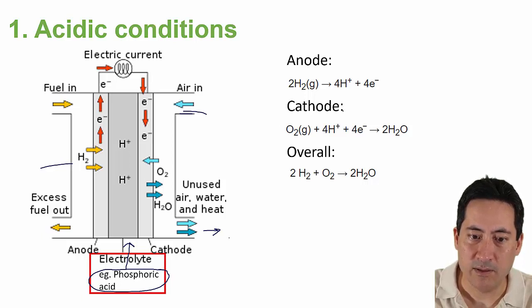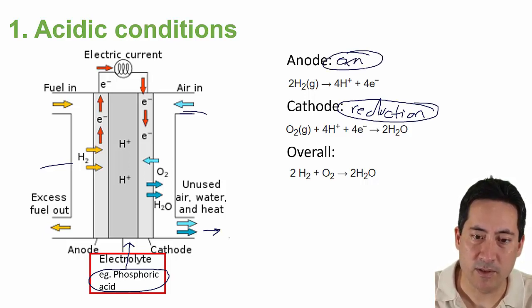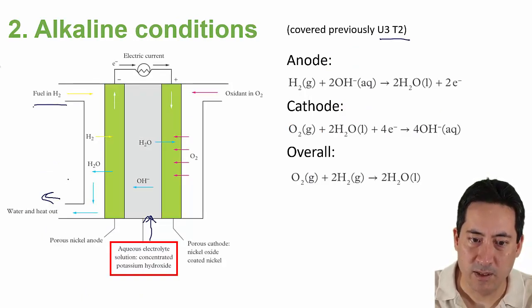And so the cathode, I teach my students, reduction always occurs at the cathode. And then so oxidation always occurs at the anode. So I'll write that over here as well. And so it's useful to say that at the cathode, the oxygen is reduced.